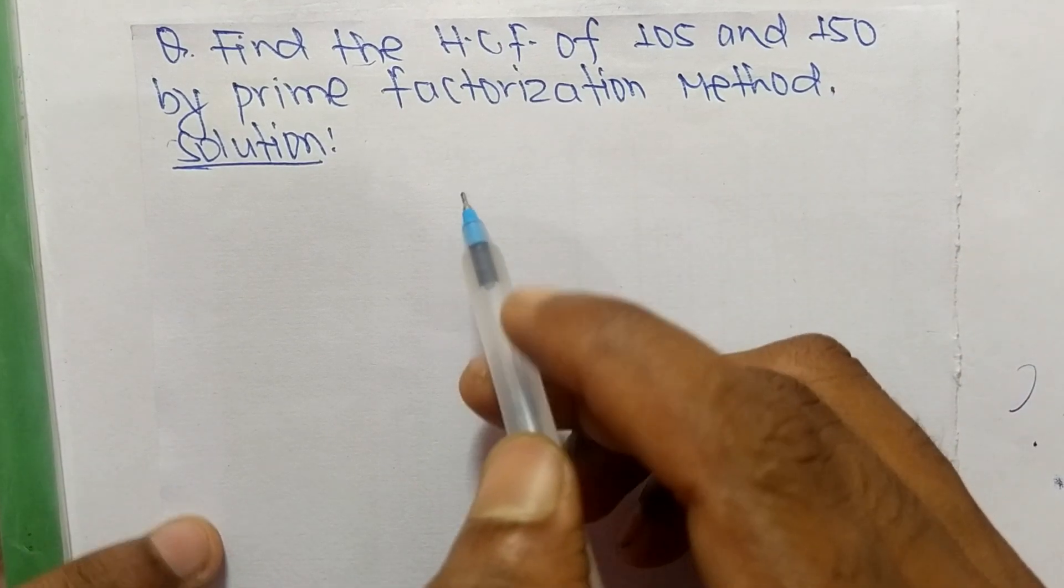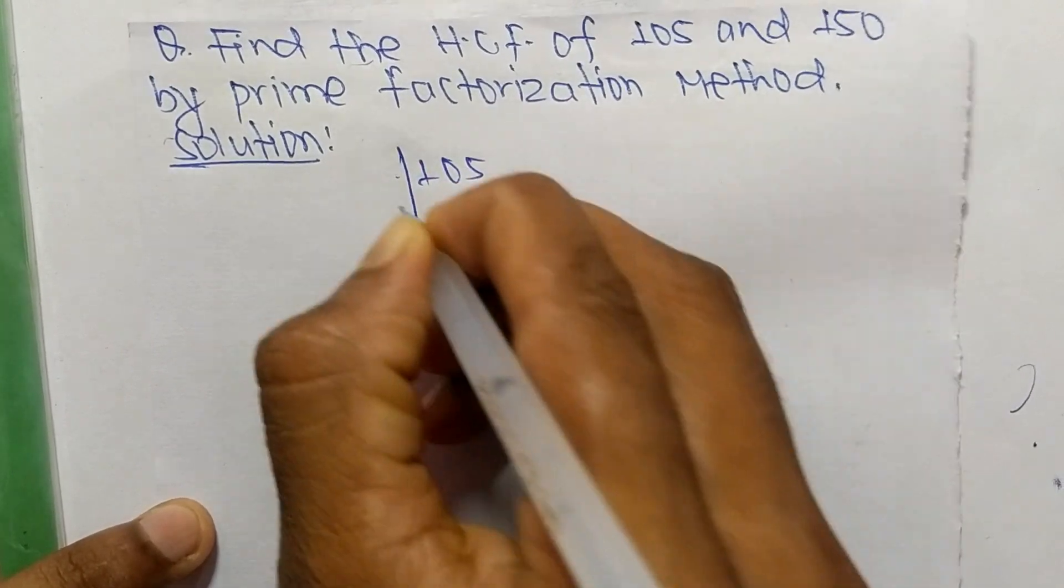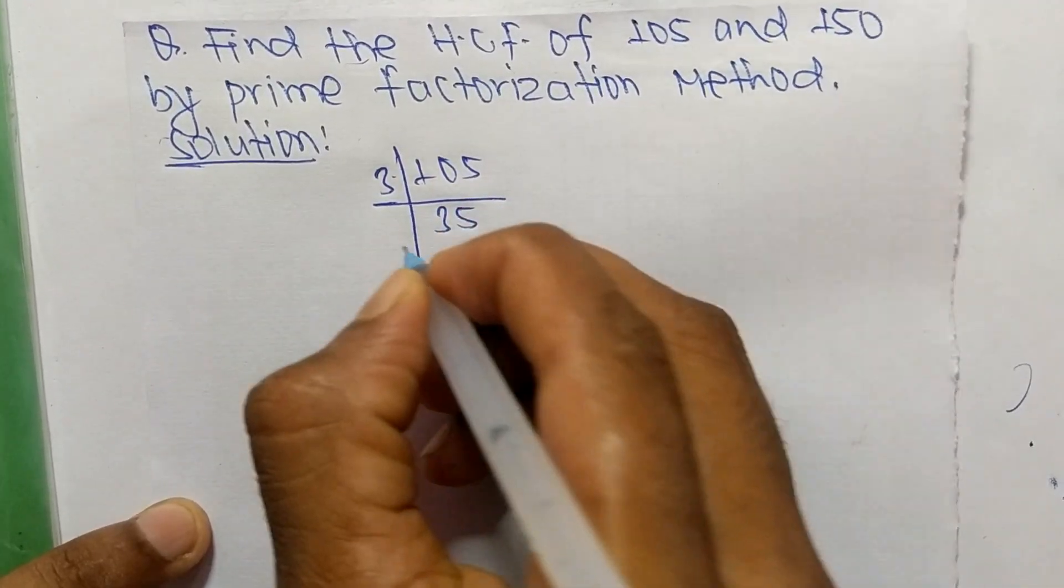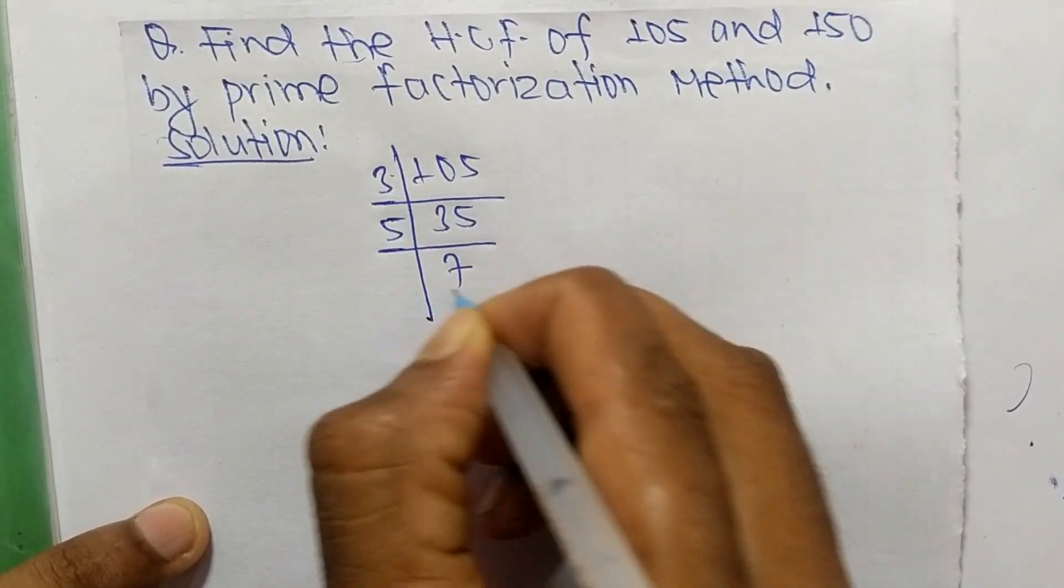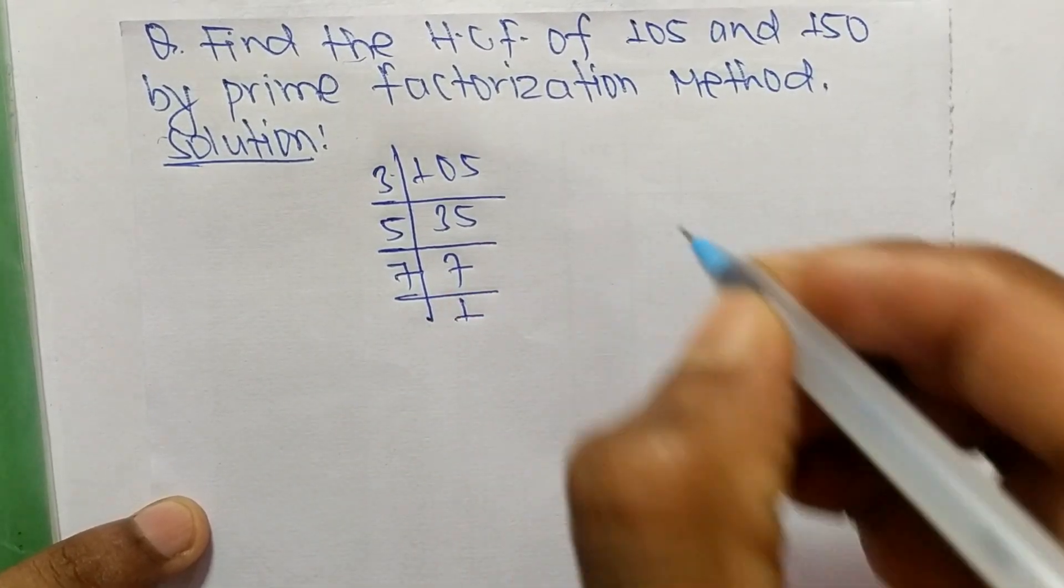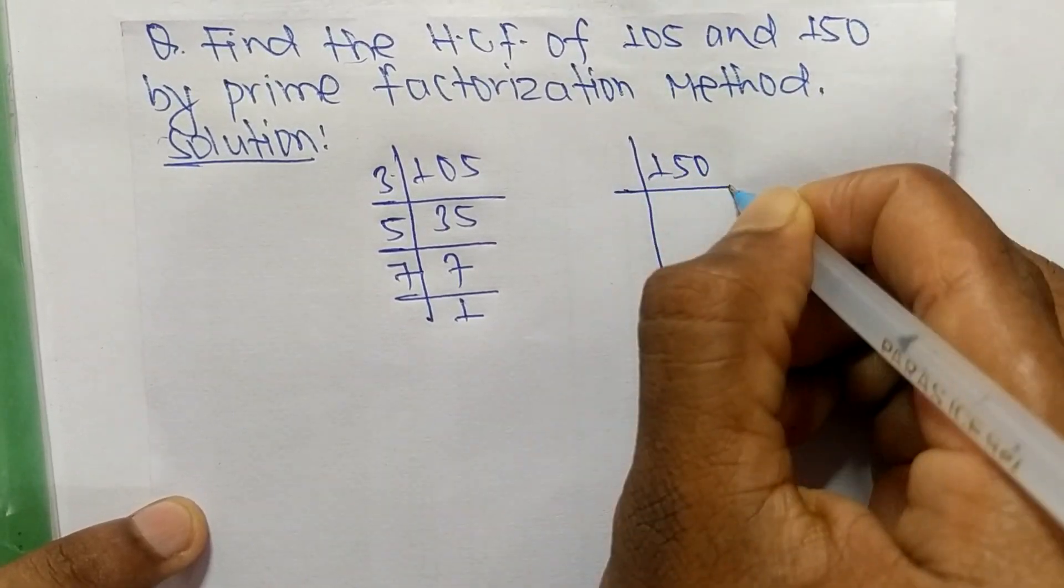First, we find the prime factors of 105. 3 times 35 equals 105, 5 times 7 equals 35, and 7 times 1 equals 7. Now for the prime factors of 150, 2 times 75 equals 150.